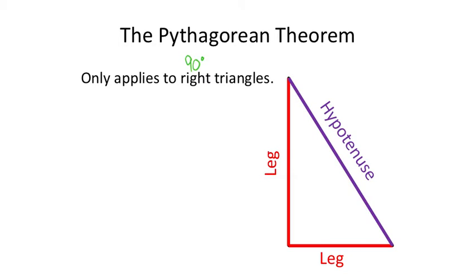There can only be one 90-degree angle in a triangle. This little mark shown in a triangle tells you that it's 90 degrees. For this particular section of this module, sometimes they may not actually show that mark, but since this is the Pythagorean theorem and it only applies to right triangles, we're going to make the assumption that it should be there.